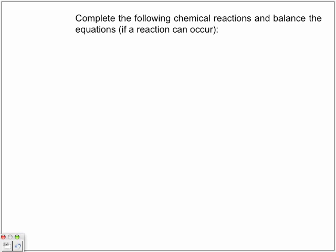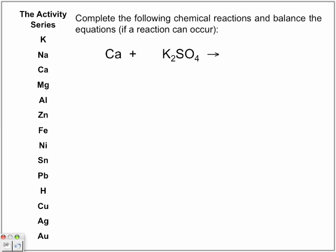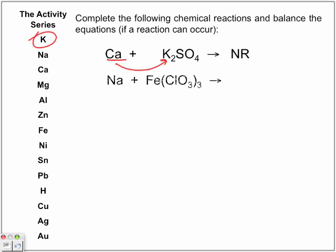Complete and balance: calcium and potassium sulfate. If a reaction cannot occur, just write your reactants, then an arrow, then 'NR' or 'no reaction' in the products. Here's the activity series — calcium is present, but potassium is higher. Can calcium displace potassium? No, because potassium is highest on the activity series, so nothing will displace potassium. No reaction will take place.